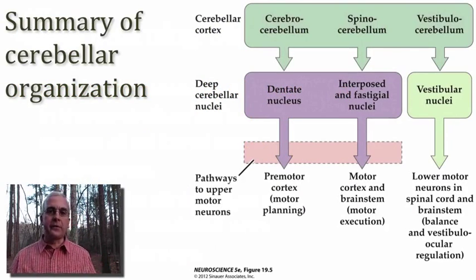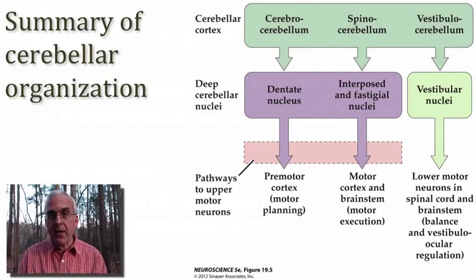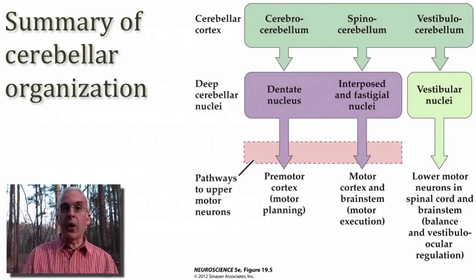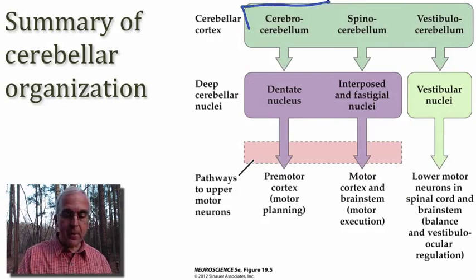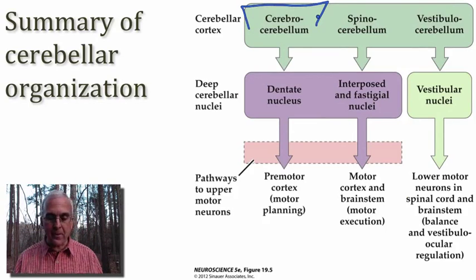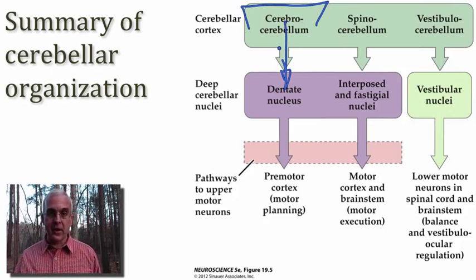Let me first summarize both the anatomy and function of these cerebellar circuits. I'll reinforce our functional division of the cerebellum into a medial spinal cerebellum, a lateral cerebrocerebellum, and an inferior lobe called the vestibulocerebellum. The cerebrocerebellum includes much of the hemispheres of the cerebellar cortex, and these hemispheres send connections into the dentate nucleus down in the deep white matter of the cerebellum.